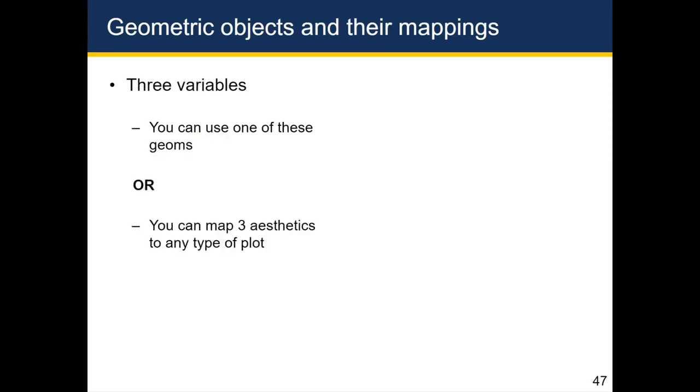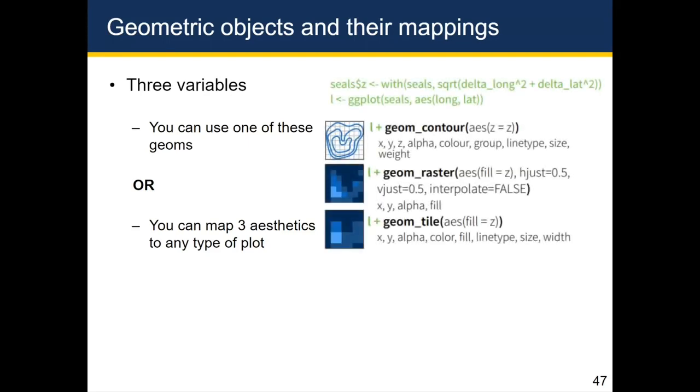Now, if you've got three or more variables, with three variables, you can use one of these geoms: geom_contour, geom_raster, geom_tile. But typically what we end up doing is we use one of the geoms we've already learned about. Could be a bar chart, could be a scatter plot. And we map the third variable to one of the other aesthetics for those existing geoms.